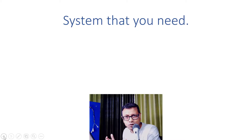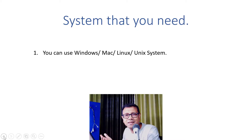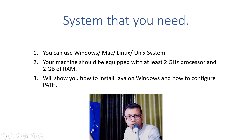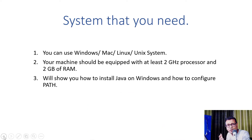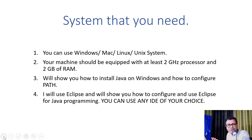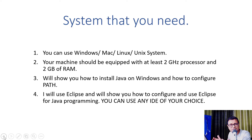For system requirements, you can use Windows, Mac, Linux, or Unix. You'll need a machine with at least a two gigahertz CPU and two GB of RAM. I'll show you how to download, install, and configure Java on Windows, and I'll provide links for other operating systems in the description section. I'll use the Eclipse IDE since it's the industry standard, but you're free to use any IDE. I'll also show you how to write, compile, and execute a Java program using a simple text editor from the terminal.